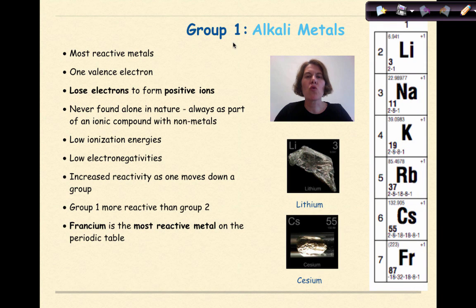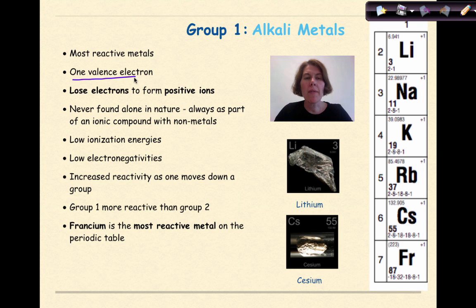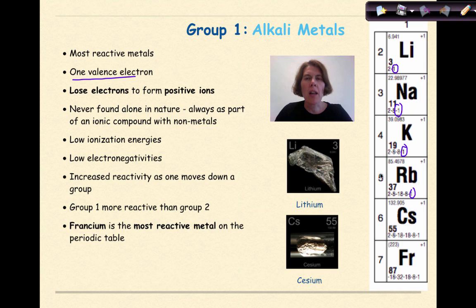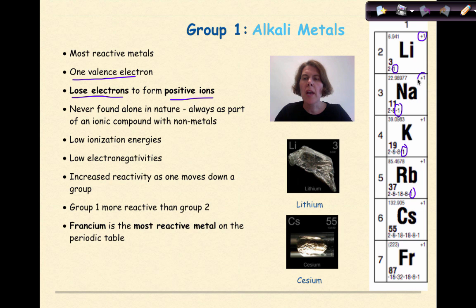Let's start off by talking about Group 1, the alkali metals. They are the most reactive metals on the Periodic Table. They only have 1 valence electron, which is really important to notice. You can see that 1 valence electron by looking at the end of the electron configuration — they all end with the number 1. They lose electrons to form positive ions, and we can see that all of these Group 1 elements have a plus 1 charge.